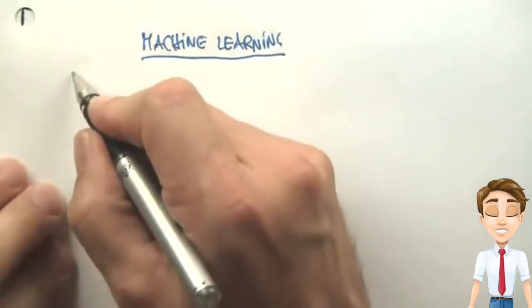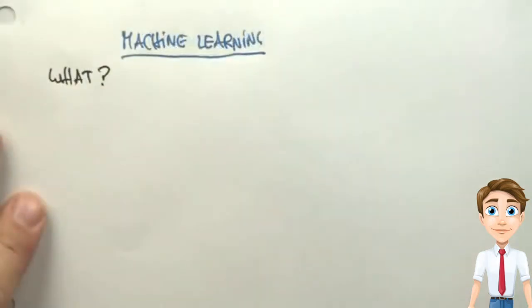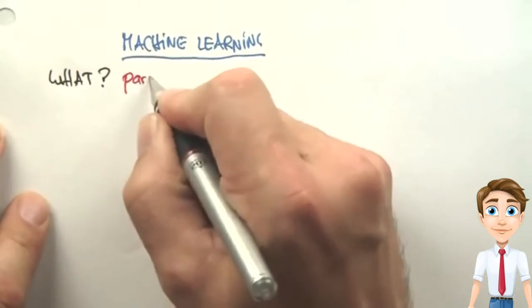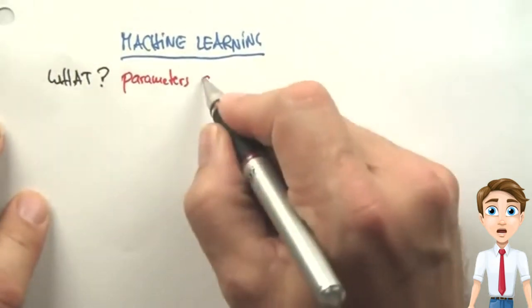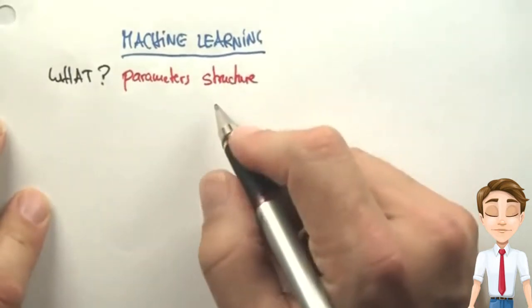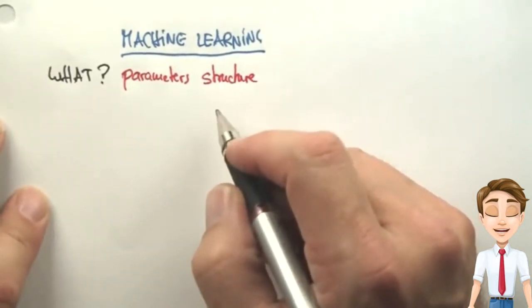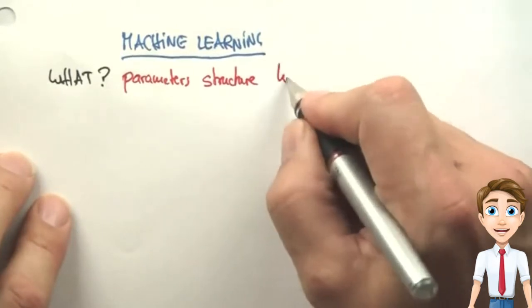Let's start with the what. What is being learned? You can learn parameters, like the probabilities of a Bayesian network. You can learn structure, like the arc structure of a Bayesian network. And you might even discover hidden concepts.